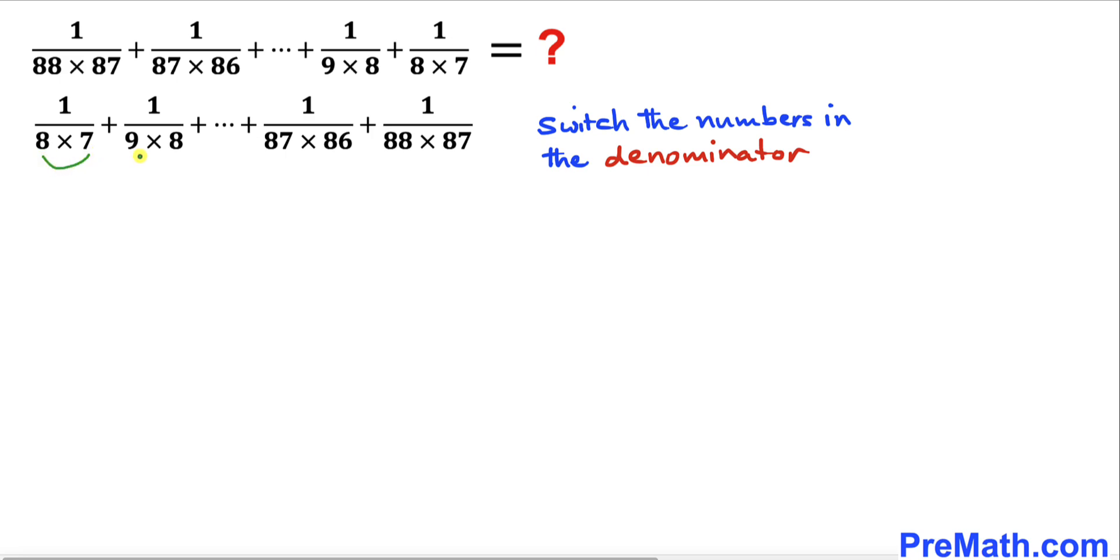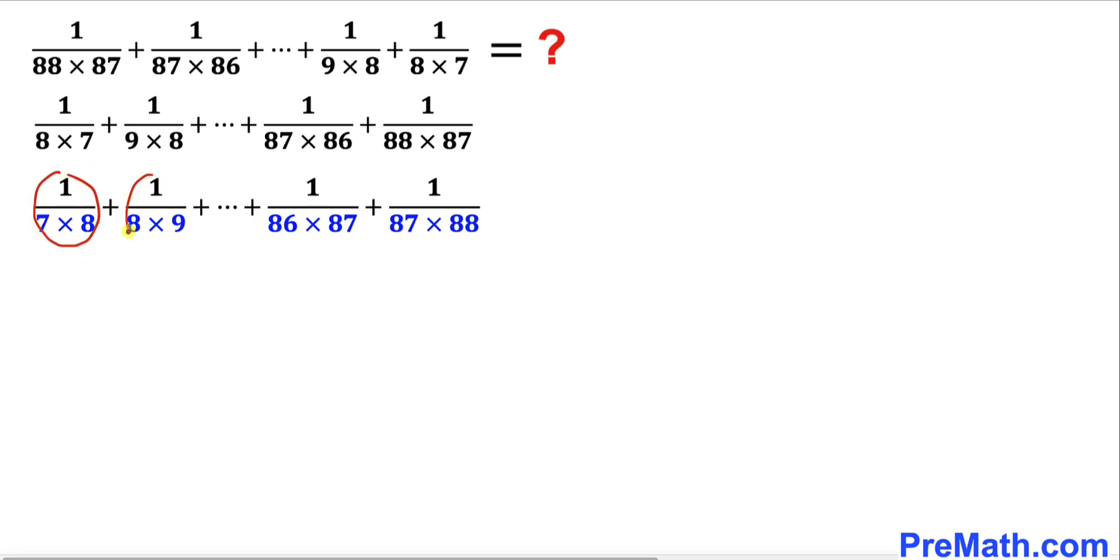Now in this next step we are going to rearrange these numbers in the denominators. This 8 and 7 have been switched to 7 and 8, and so on. Now we are going to manipulate all these terms to get the sum of the series.